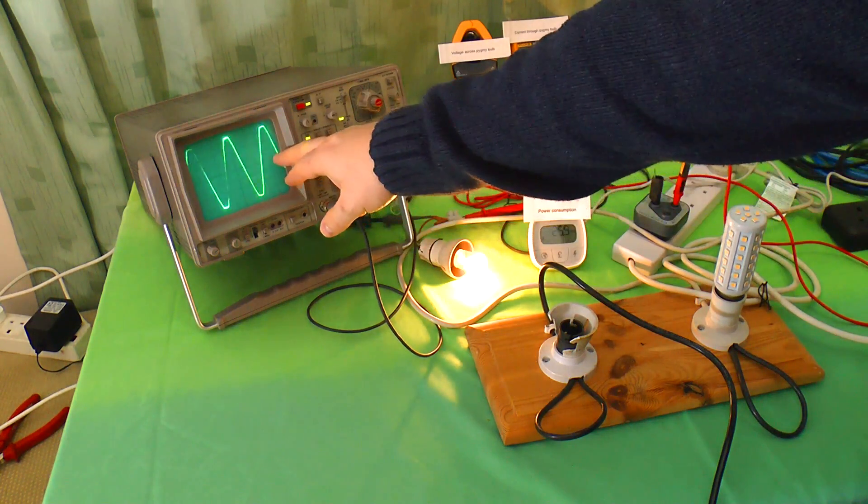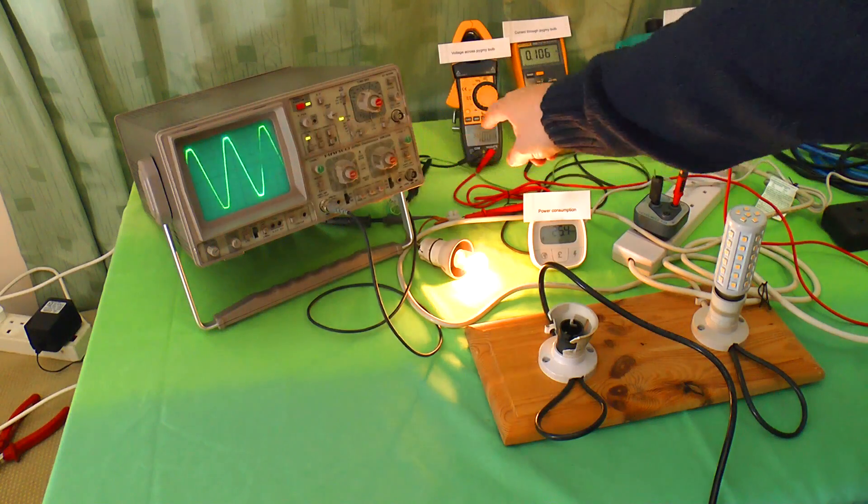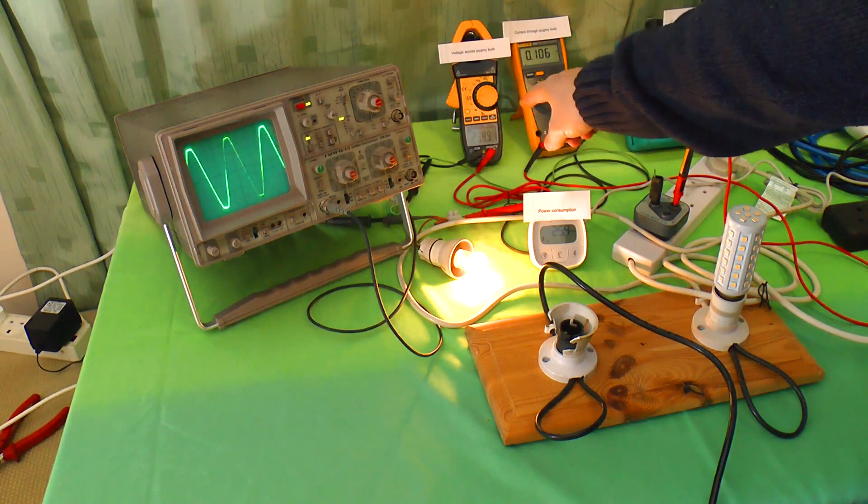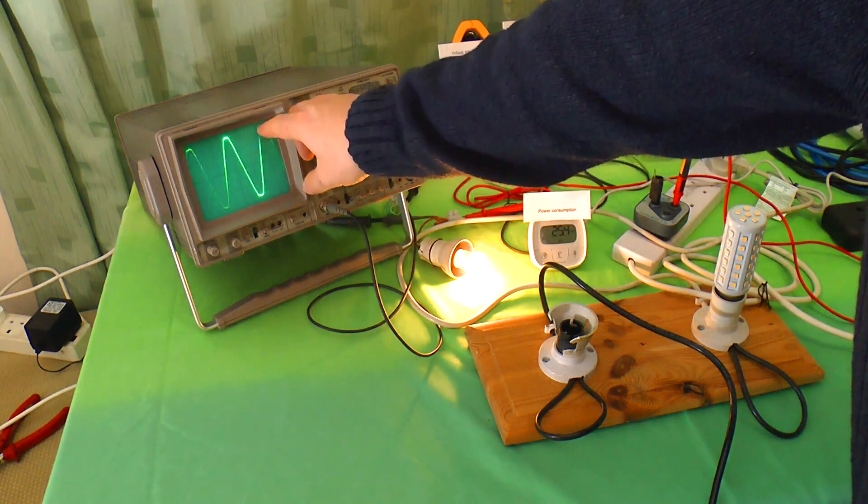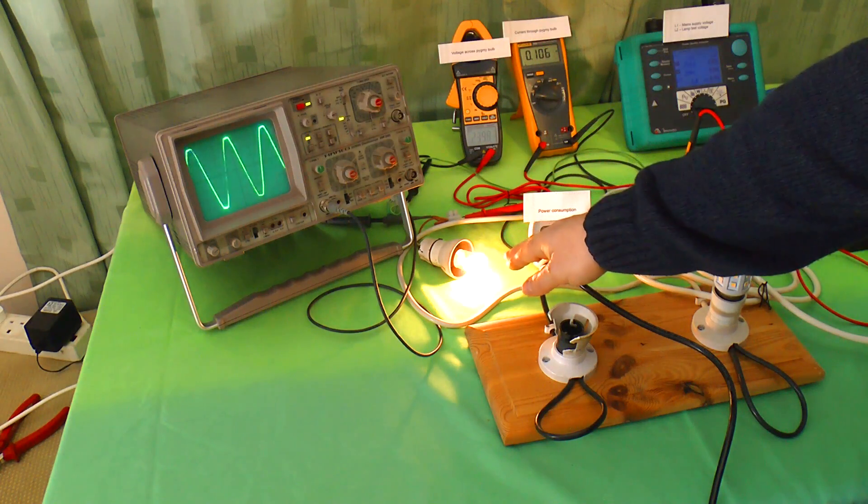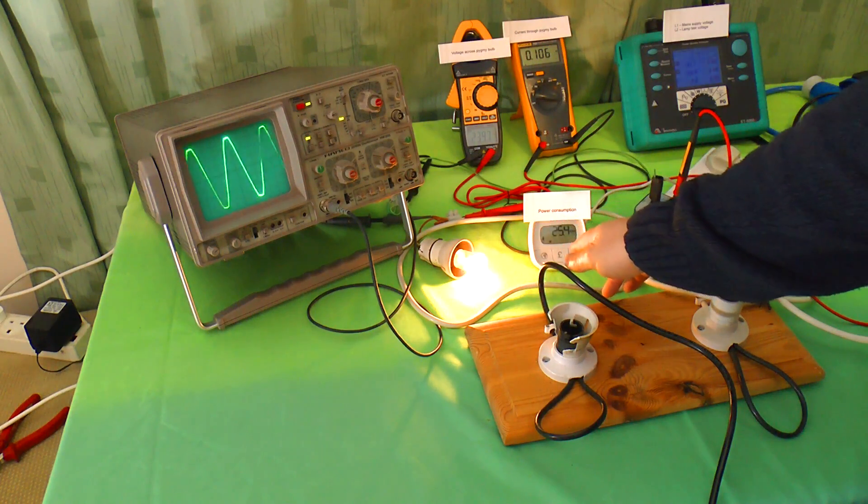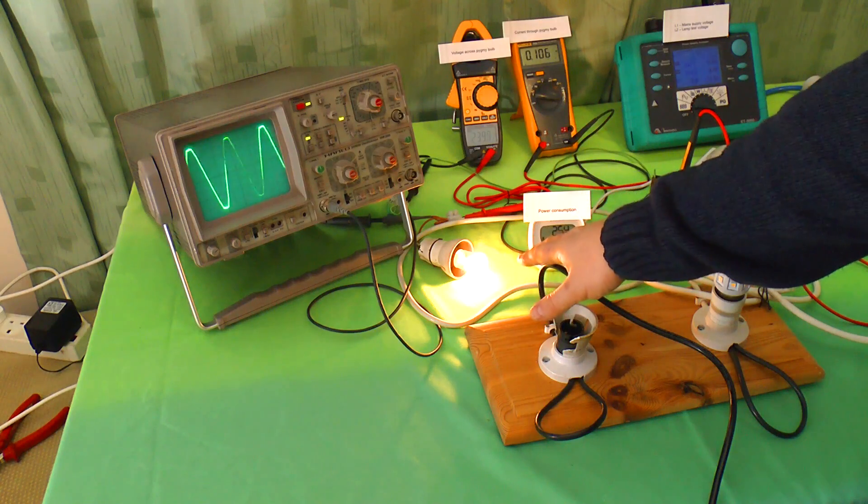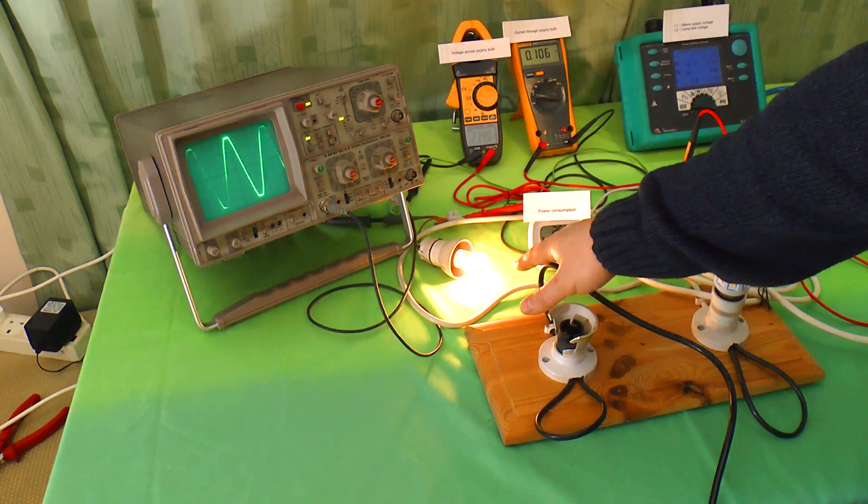Now, for those who think these meters may be showing slightly odd readings because of the way this draws power, this oscilloscope is showing the incoming main supply, which although is 240 volts, that's the mean voltage, the peak is actually closer to 340 volts. The pygmy bulb is drawing 25.4 watts, so it's pretty much what you'd expect for a 25 watt pygmy bulb.